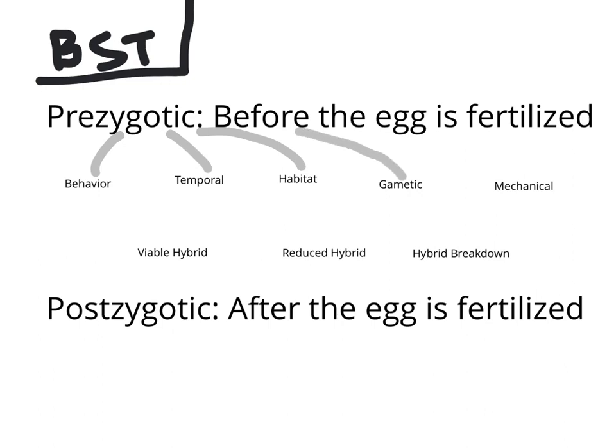A gametic barrier means that even if they do mate, the gametes won't work together. Your gametes are your sex cells, like sperm and egg, and their gametic cells would not be able to produce offspring. A mechanical barrier means that the sexual or reproductive organs simply do not work between the two species.